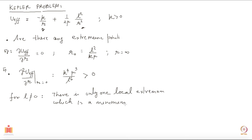Knowing that at r naught there is a minimum, and that U_effective goes to zero asymptotically as r goes to infinity, and that as r approaches zero the potential blows up in the positive direction — because the centrifugal term blows up faster than the 1/r term — this is the kind of graph you expect for U_effective for the Kepler problem.